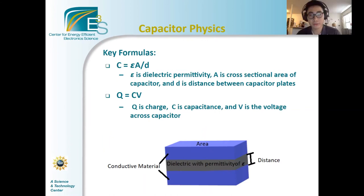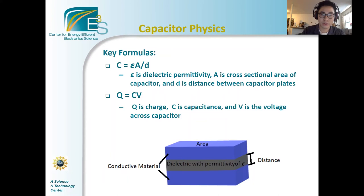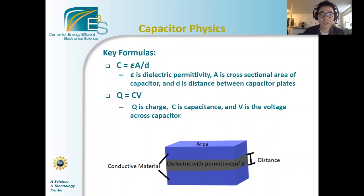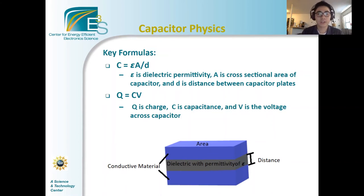Here are some of the formulas to keep in mind when working with capacitors. The first formula is C equals epsilon times A over D, where epsilon is the dielectric permittivity, C is the capacitance of the capacitor, Q is the charge of each plate, and D is the distance or the gap between the capacitor plates. This formula represents the relationship between the capacitance of a capacitor and the area of a plate of the capacitor.